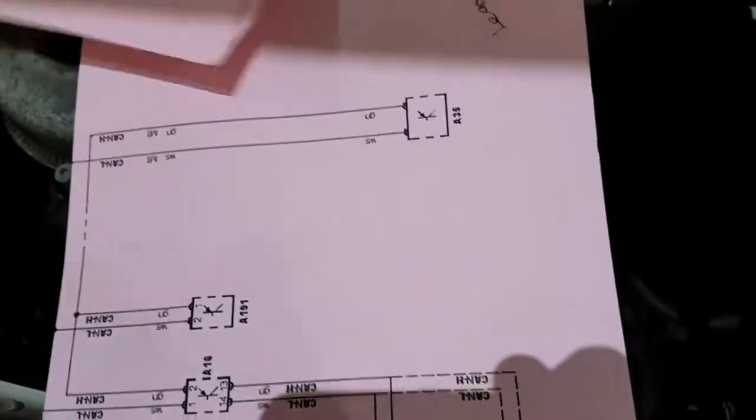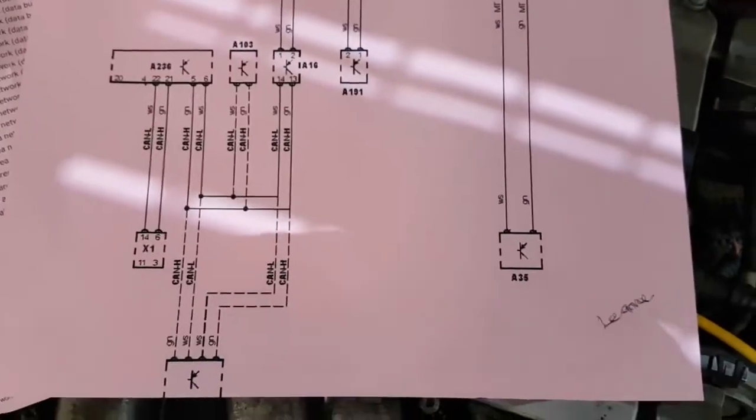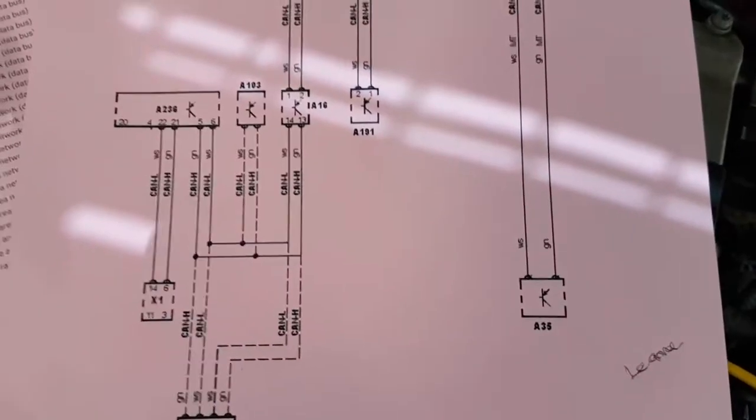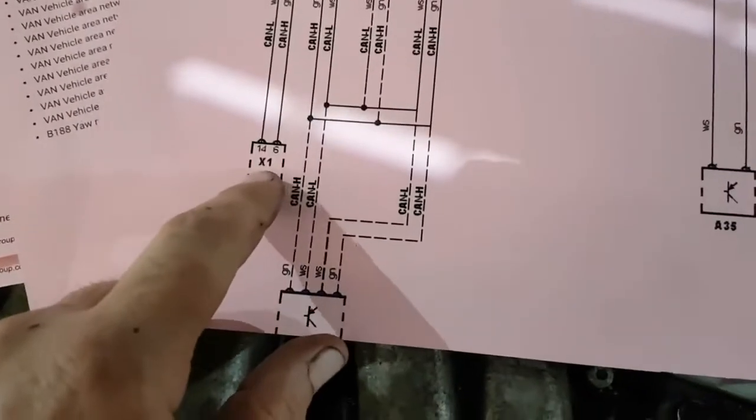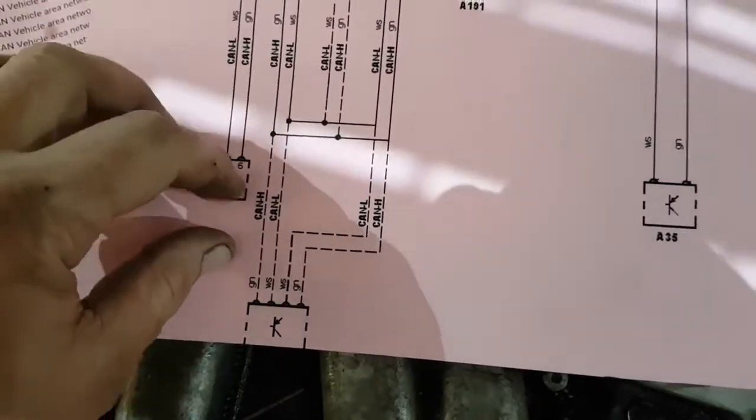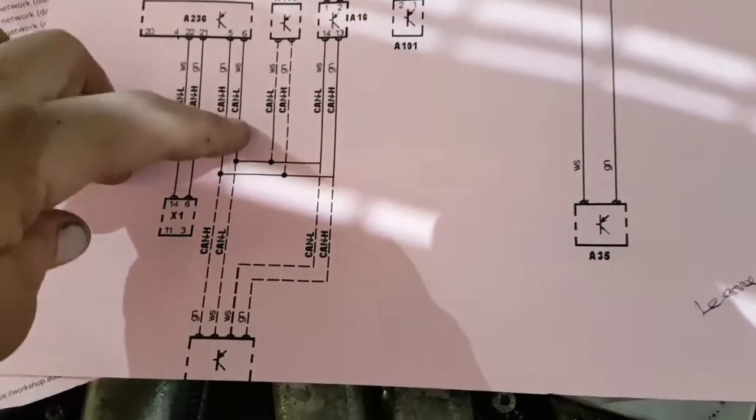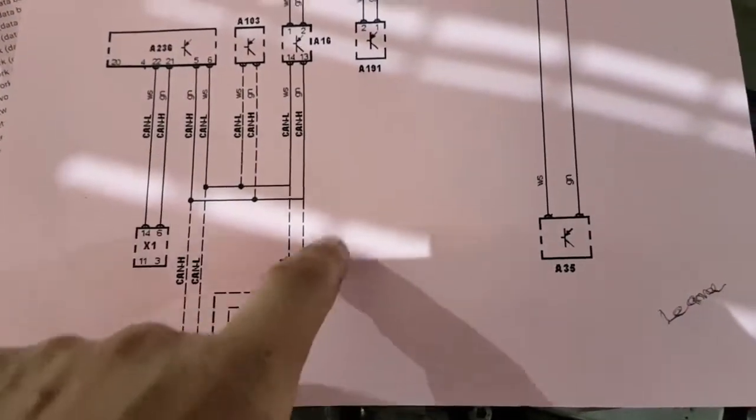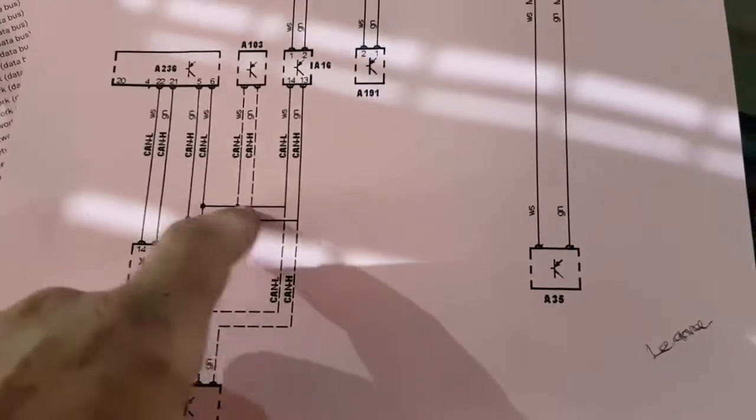So first thing I do to make life easier is when they get a bit complicated I like to just thin it right down. So what I've done here, as you can see I've removed all the VAN modules from the system. So now what we can see is X1 is our DLC. We can see it goes up through a module. And then we've got an optional module here depending on whether it's got a stability program or not.